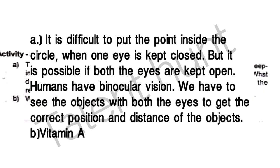It is difficult to put a point inside the circle when one eye is kept closed, but it is possible if both eyes are kept open. Humans have binocular vision. We need to see objects with both eyes to get the correct position and distance of the objects.